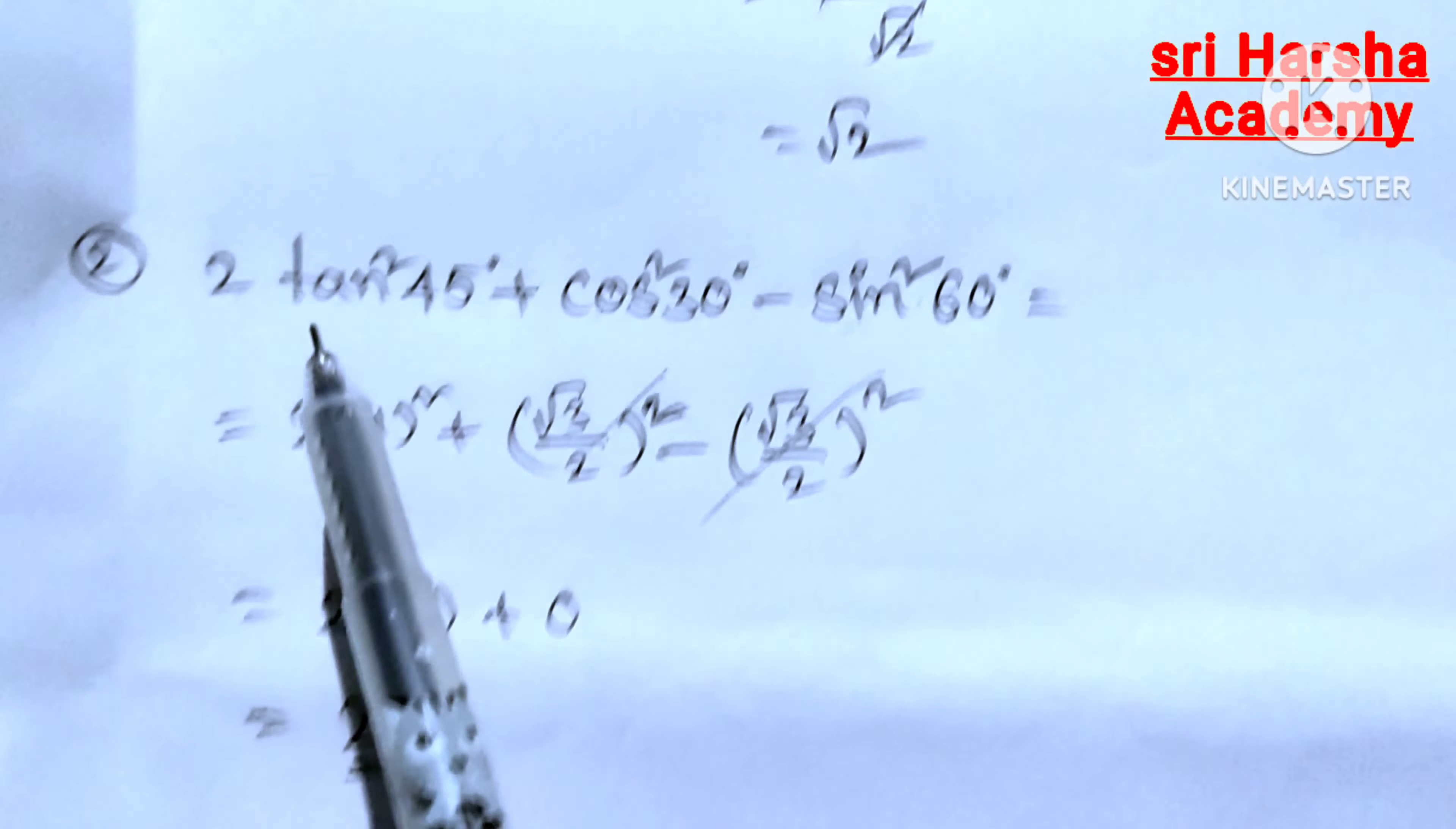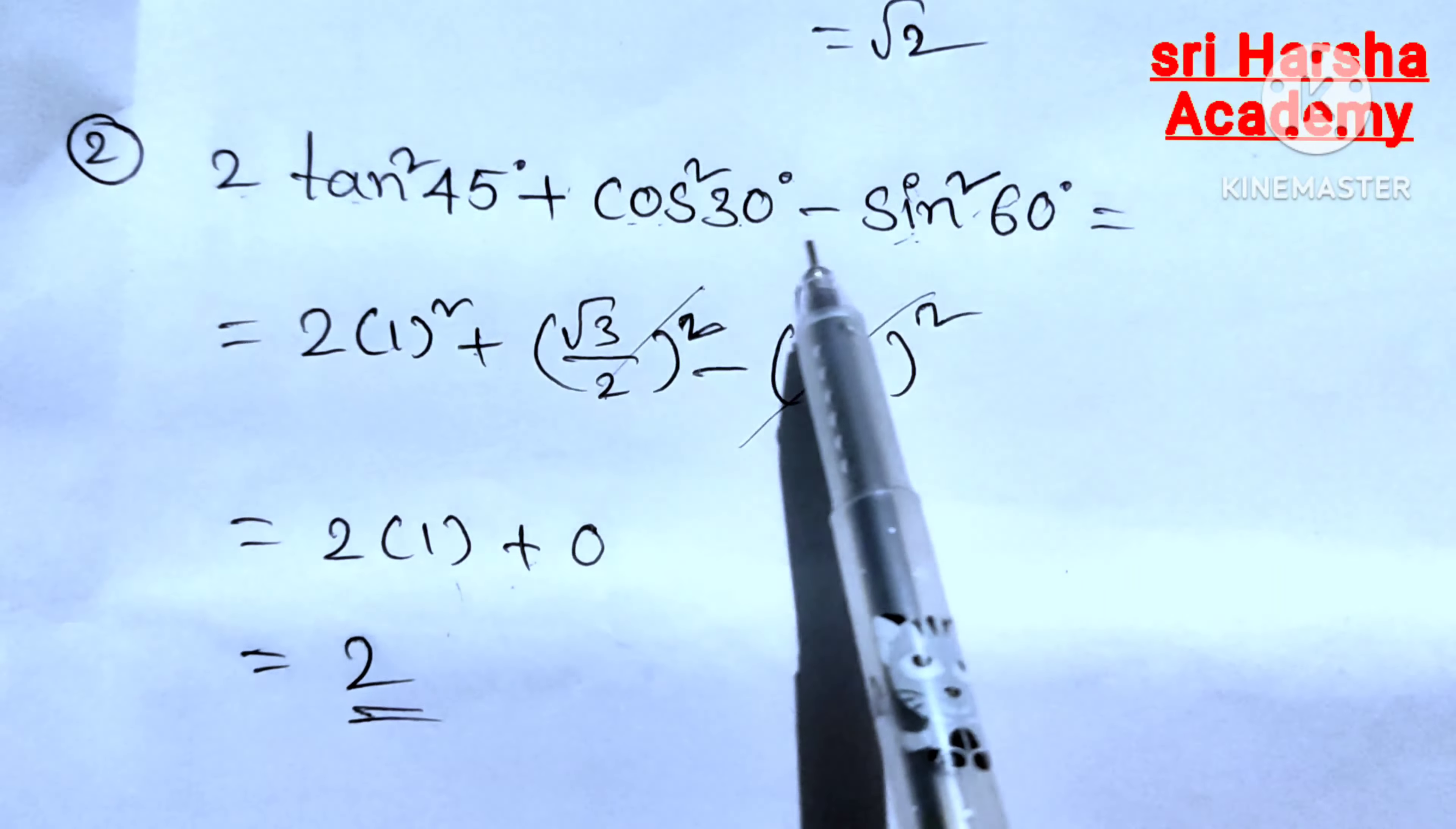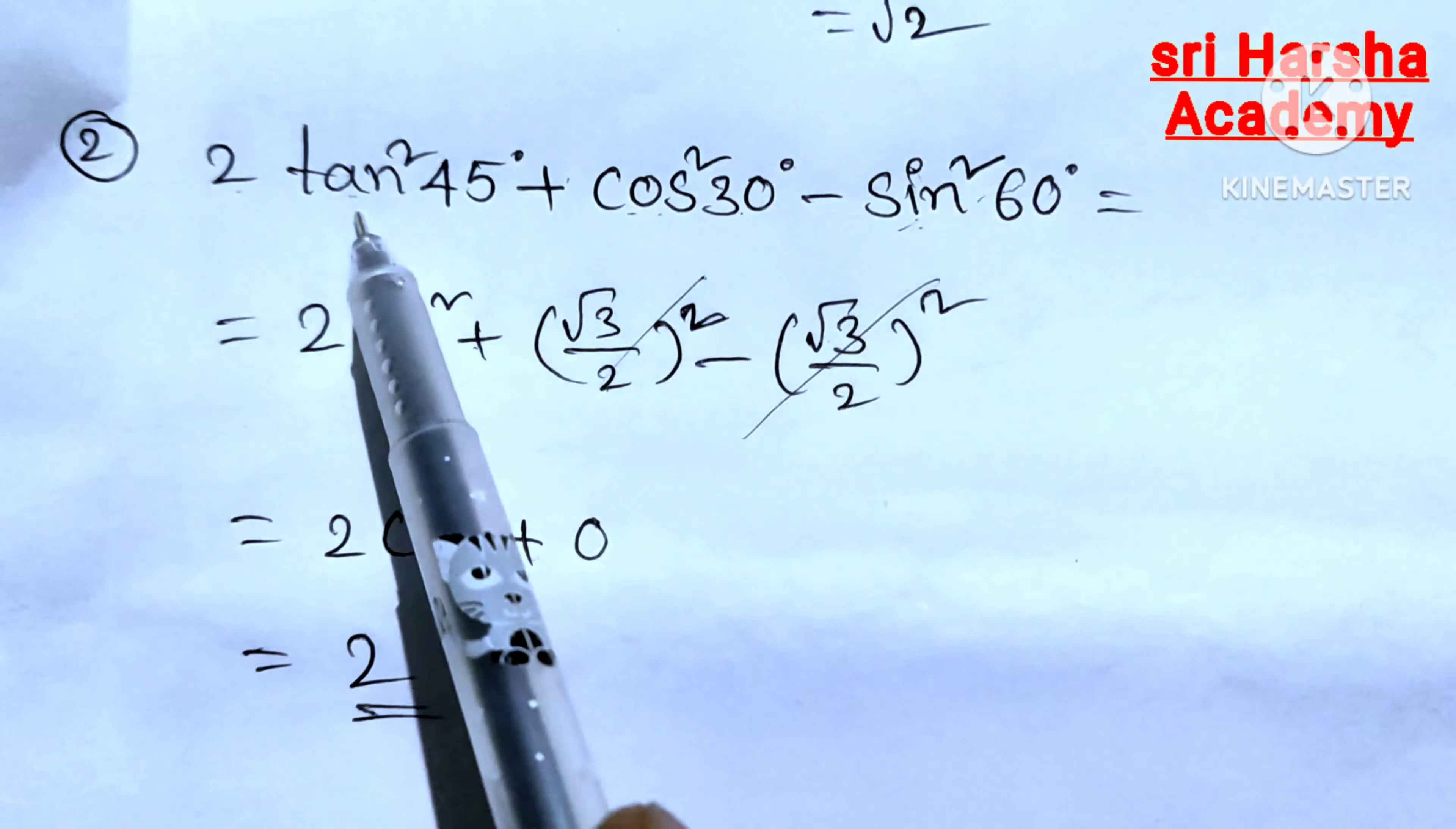Next question. Find 2 tan square 45 degrees plus cos square 30 degrees minus sin square 60 degrees.